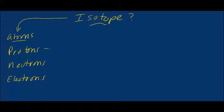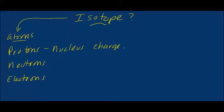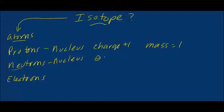Protons are in the nucleus and they have an electric charge of plus one. Protons also have a mass equal to one unit. Neutrons, like protons, are found in the nucleus, and neutrons have zero charge — they're neutral, which is probably how they get their name. Each neutron has a mass equal to one, just like a proton does.